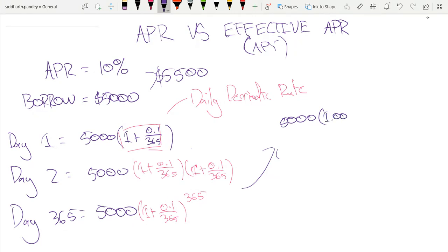1.000273973 to the power of 365. Once again, this is still the same number, it's just our daily periodic rate expressed with a decimal as opposed to with a fraction. So what's this number to the power of 365? This is 5000 times by 1.105155782.